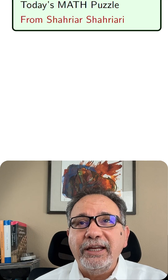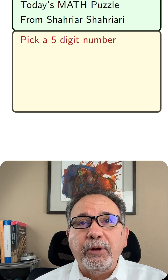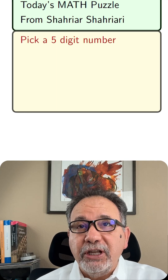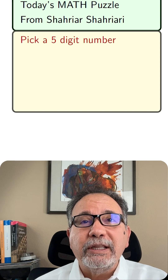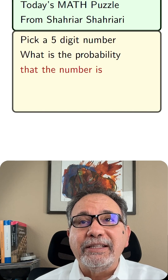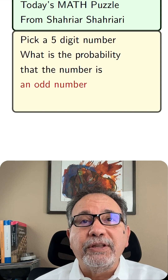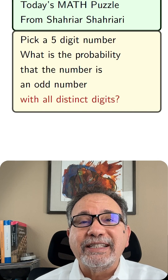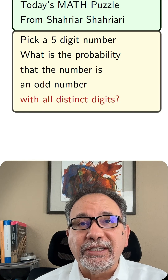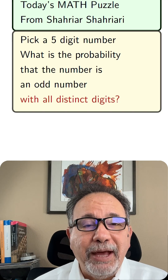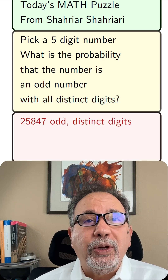My name is Shahyar Shahyari and here's a math problem for you. From among all five-digit numbers, randomly pick one. What's the probability that the number is an odd number and all of its digits are distinct — no two digits are the same? You put all five-digit numbers in a bag, mix them up, and then pick one.